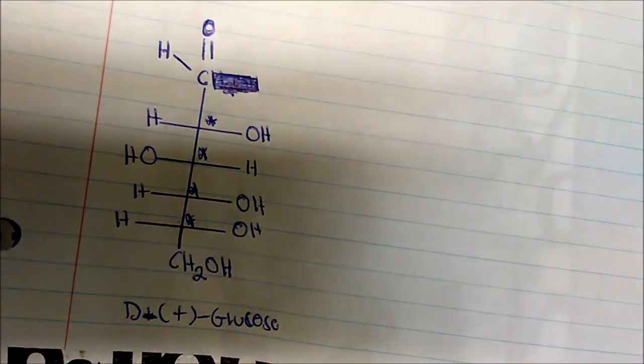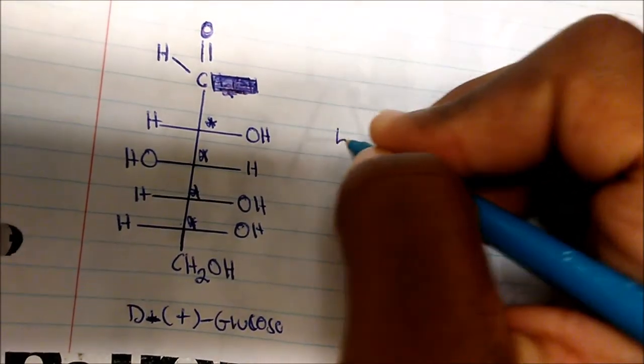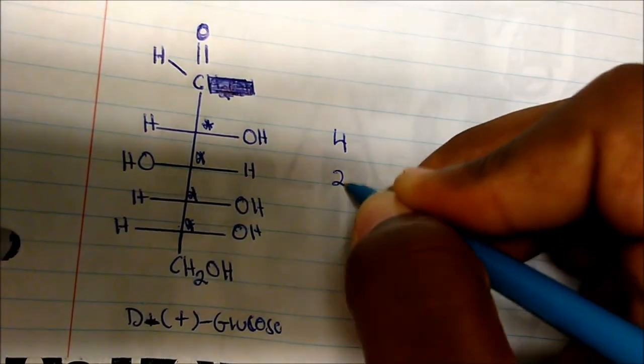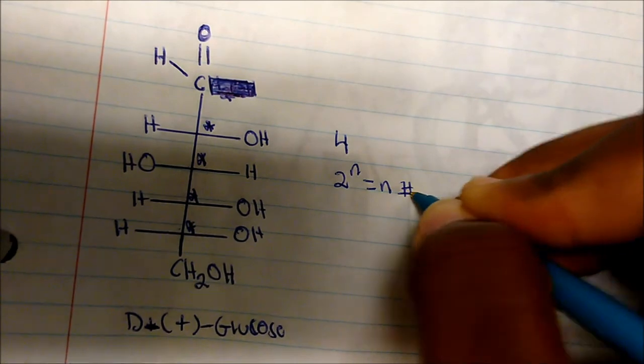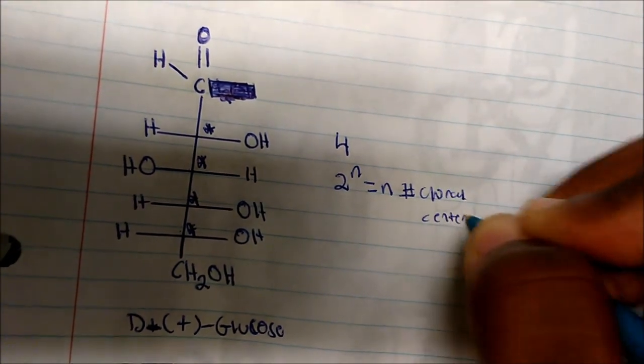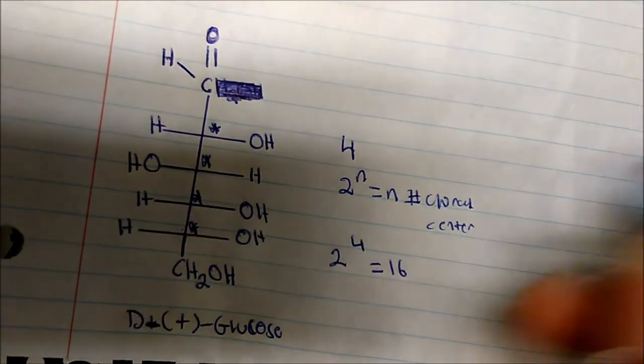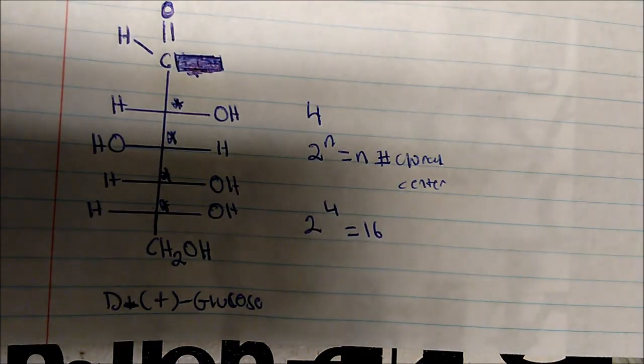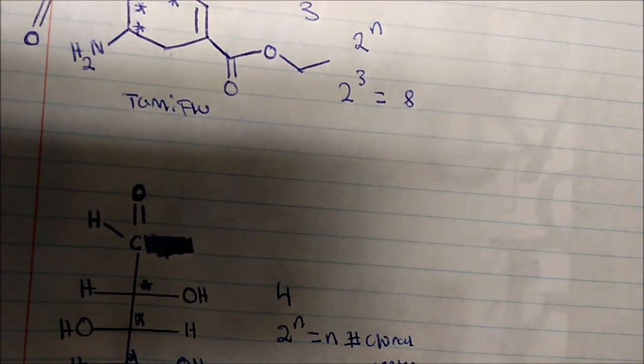The last interior carbon has an OH, a hydrogen, a CH2OH group below, and a whole group on top — so this is a chiral center. The bottom carbon cannot be chiral because it has two hydrogens. So glucose has four chiral centers, and 2^4 gives us 16 possible stereoisomers of this molecule — the most abundant sugar on Earth.